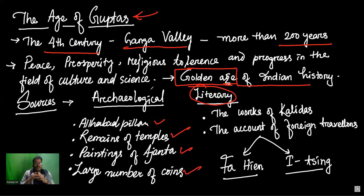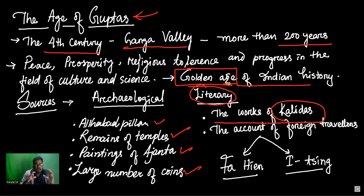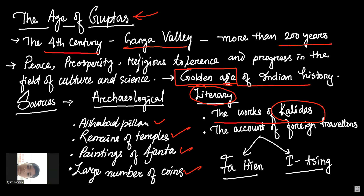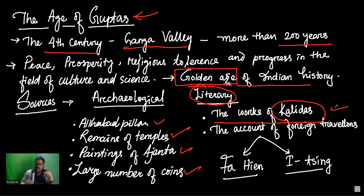Now let's talk about the literary sources of the Gupta period. Of the two important literary sources, one is the works of Kalidasa. Kalidasa, as we know, is a very famous Sanskrit poet and dramatist. He has many plays, and from what was written in that period, we can read and realize what the lifestyle of the people of that time was like — what they ate, what the challenges were, what the position of caste in society was, what the position of women in society was. All of this we can find out by reading Kalidasa's works.